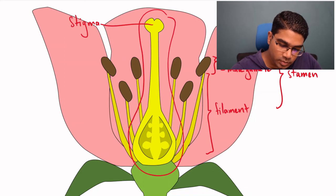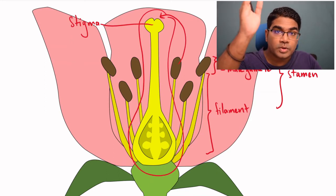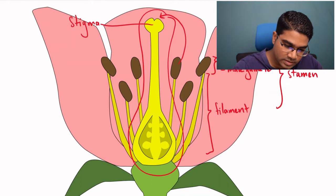During pollination, the pollen grain transfers from the anther to the stigma. And holding the stigma up so that it is high enough to catch all the pollen grains, this is the style.